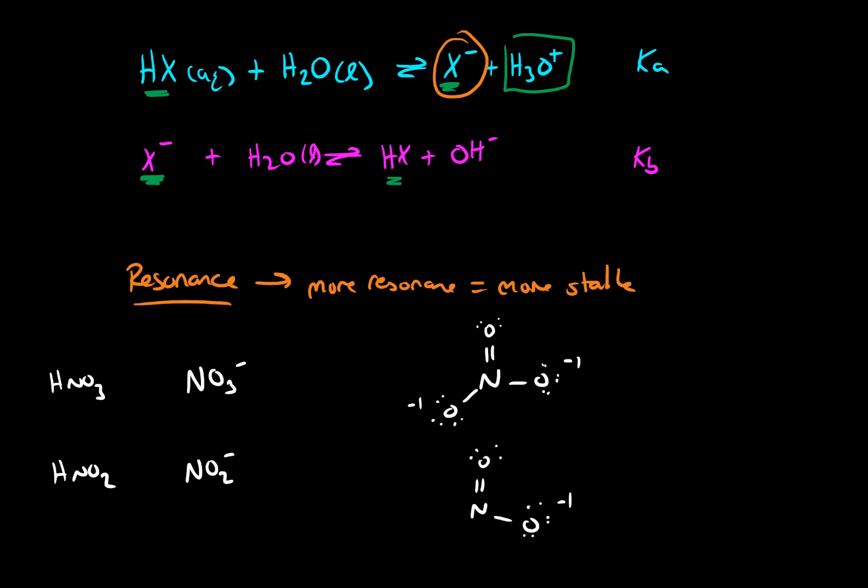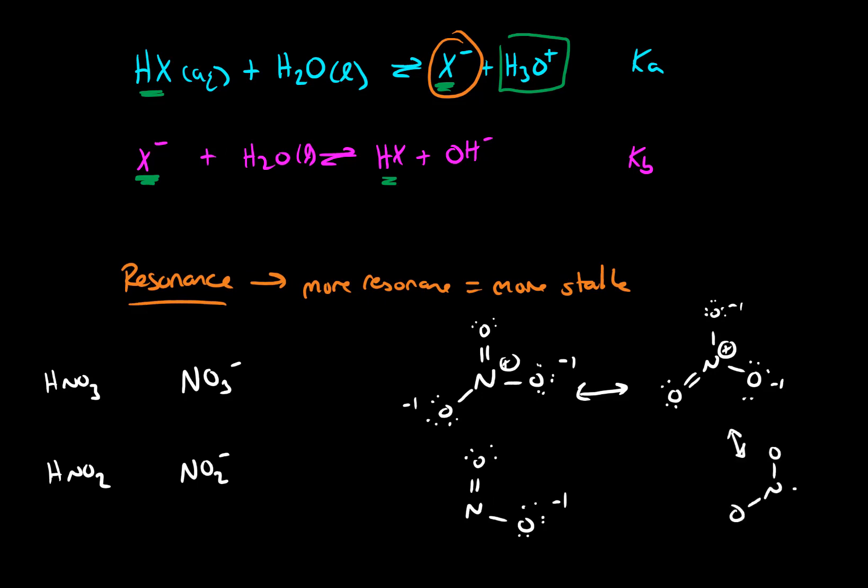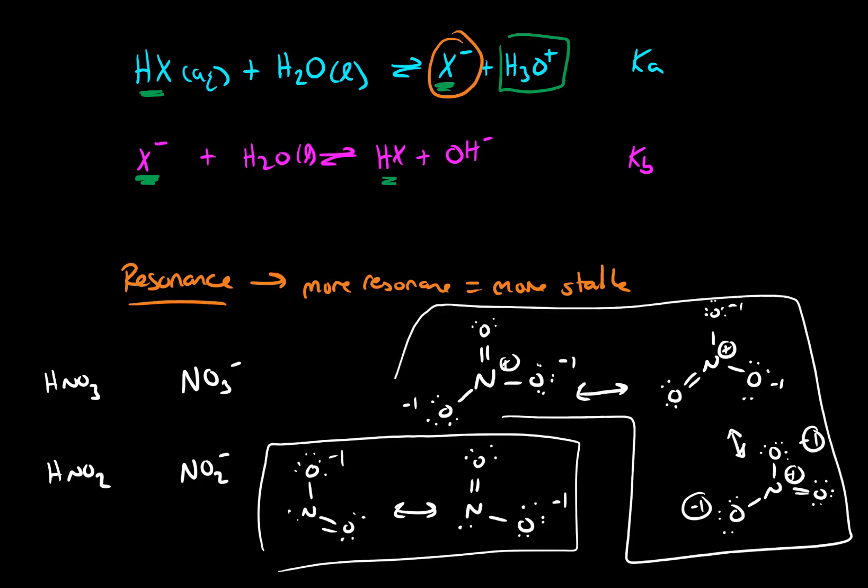So for nitrate, we're able to draw two other resonance forms. Whereas nitrite, we can actually only draw one more. So we have two resonance forms for nitrite, but we have three resonance forms for nitrate. And since there are more resonance forms for nitrate, we would say that nitrate is more stable than nitrite.